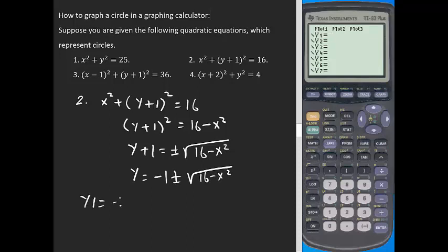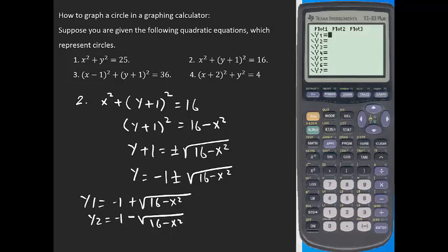We now have two forms: y1 equals negative 1 plus the square root of 16 minus x squared, and y2 equals negative 1 minus the square root of 16 minus x squared. When entering into the calculator, you can write the negative 1 first, then add or subtract the square root of 16 minus x squared.